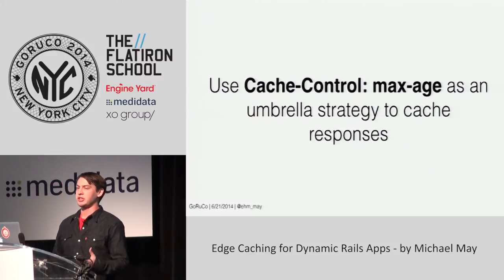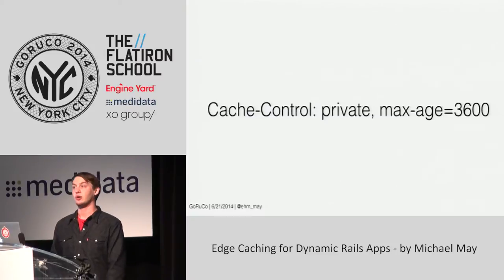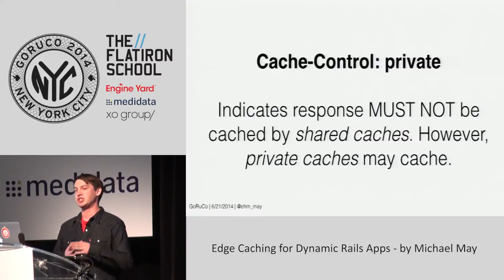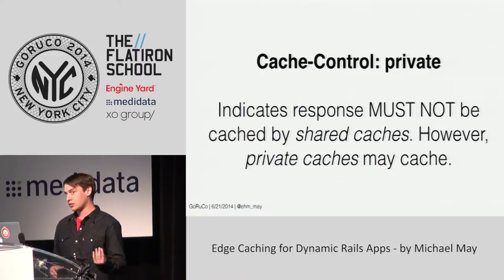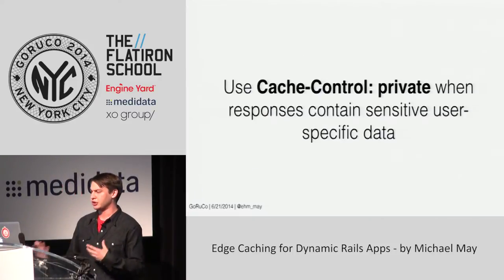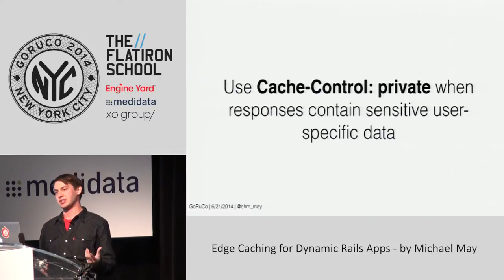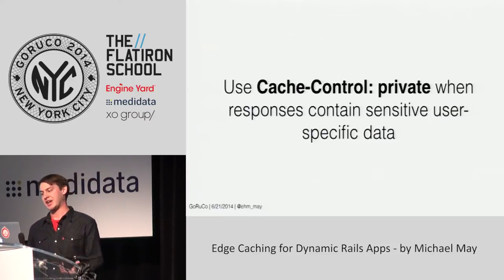You generally use max-age as an umbrella strategy to say 'cache this.' There's another directive called private — it indicates to shared caches that this response cannot be cached, however private caches like the browser can cache it. You generally use private when your responses contain some type of sensitive user-specific information that you don't want to live in a public shared cache.